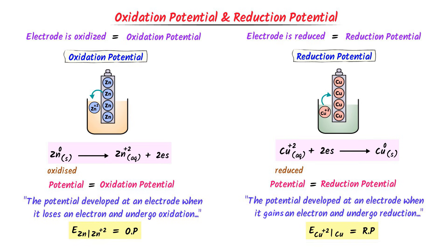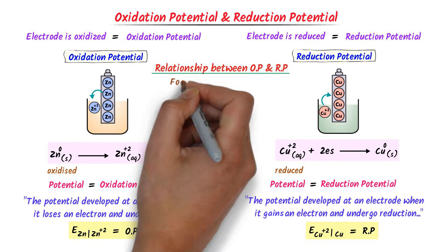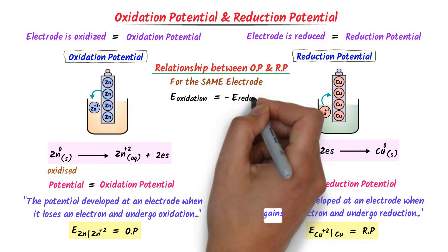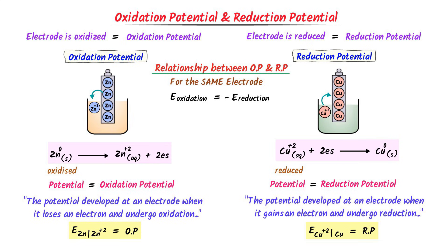You must learn this very important question: what is the relationship between oxidation potential and reduction potential? For the same electrode, oxidation potential is equal to minus the reduction potential. For example, in the case of the zinc electrode, if the oxidation potential is 0.76, then its reduction potential is minus 0.76. This negative sign means a reverse flow of electrons. By convention or tradition, we always consider reduction potential, and we will learn more about it in the next lecture.